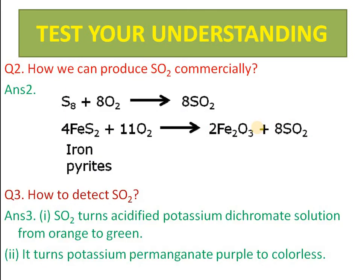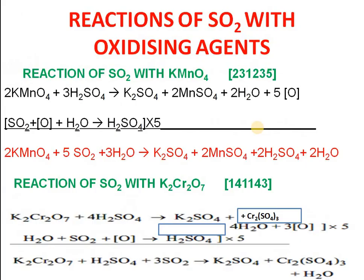Sulfur dioxide is commercially prepared by the oxidation of pyrosulfite. For detection: when this gas is passed through potassium dichromate solution, the orange color changes to green; when passed through potassium permanganate solution, the purple color changes to colorless. These are the two detection reactions, corresponding to the KMnO₄ and potassium dichromate reactions discussed earlier.